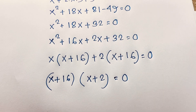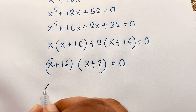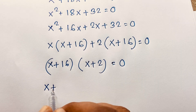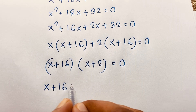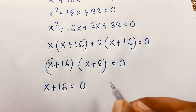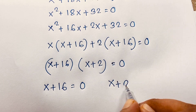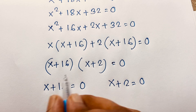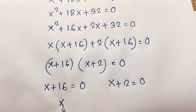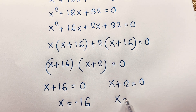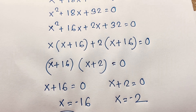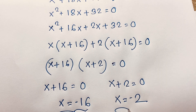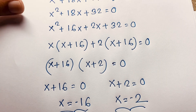So we will find out two cases. Our first case is x plus 16 is equal to 0. In the other case, x plus 2 is equal to 0. Then if I move 16 to this side, x is equal to minus 16. And x is equal to minus 2. So we find our final answer: x = -16 and x = -2.